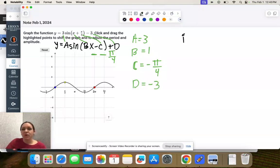Okay, step one, find your midline, which is d. So y = -3. My new program here, I'm just writing too fast for it.